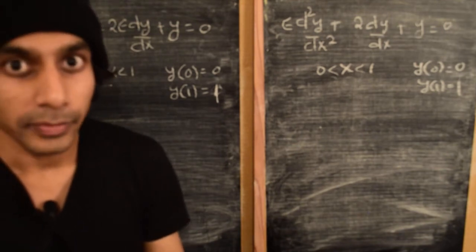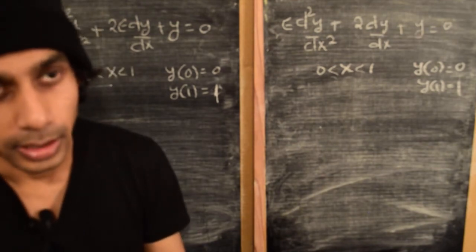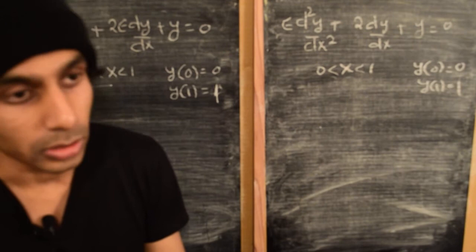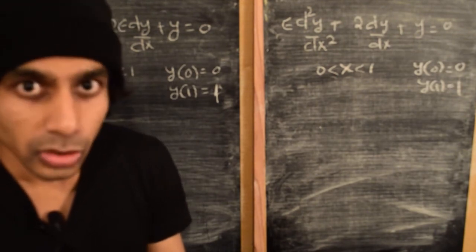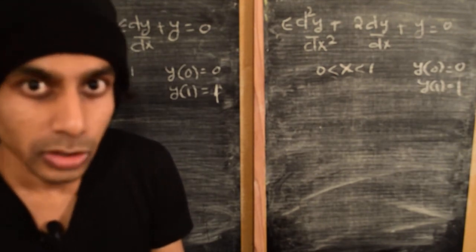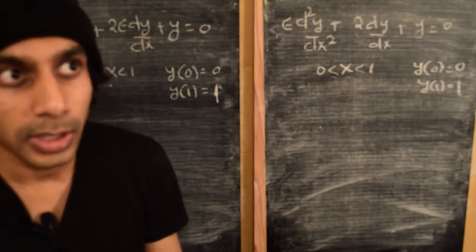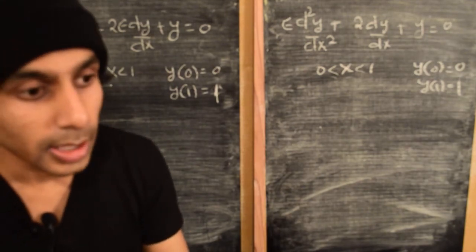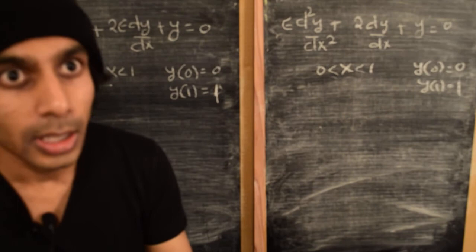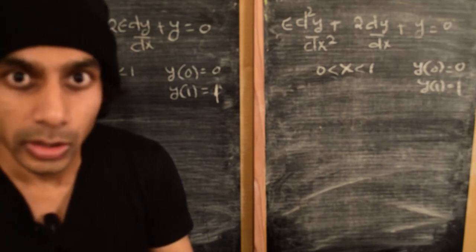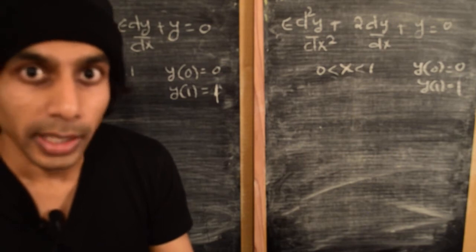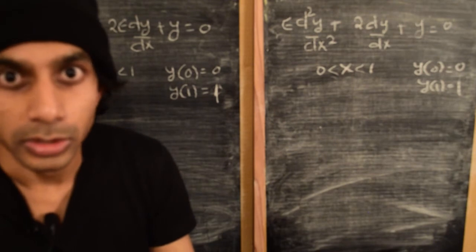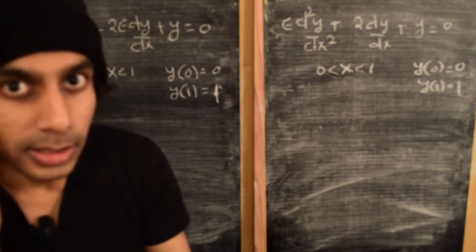For instance, a singular perturbation problem would have the small parameter multiplying the highest degree term typically in any higher-order algebraic equation. Now let's turn our attention towards ordinary differential equations. Here again we'll see that the way we identify different regimes of perturbation theory — like singular perturbation and regular perturbation — working with the quadratic equation will help us understand even linear second-order differential equations.